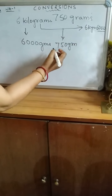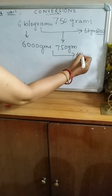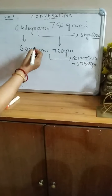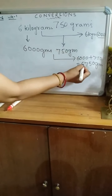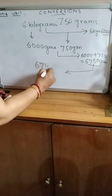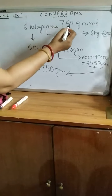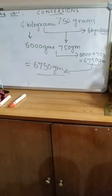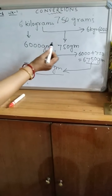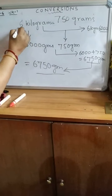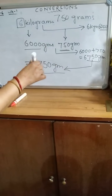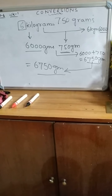6 kilograms is equal to 6000 grams. We add this 750 grams. So 6000 plus 750 gives 6750 grams. After adding, we get 6750 grams. So 6 kilograms 750 grams is converted into grams. What we have done: we convert the number of kilograms into grams and add it to the number of grams.